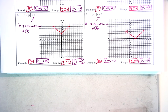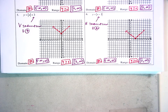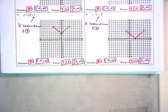For all absolute value functions, the domain is always the same: all real numbers, or in interval notation from negative to positive infinity. For the range, it's always Y is greater than or equal to zero — unless we have a reflection over the X-axis or a vertical translation that moves it up or down. That's all for today. Hope you guys have a wonderful rest of your day!